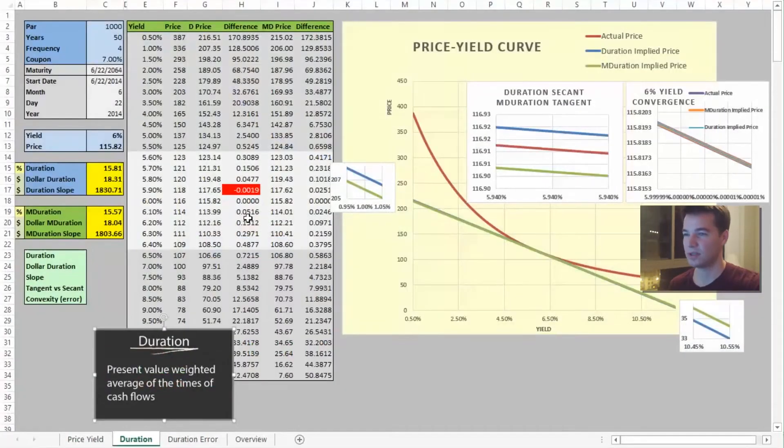So let's move on to duration here. We have a bond that matures in 50 years, quarterly payments, coupon rate is 7%. And we are using Excel's function for duration here to get our duration figure at 15.81. Our modified duration, through Excel's function, is 15.57.